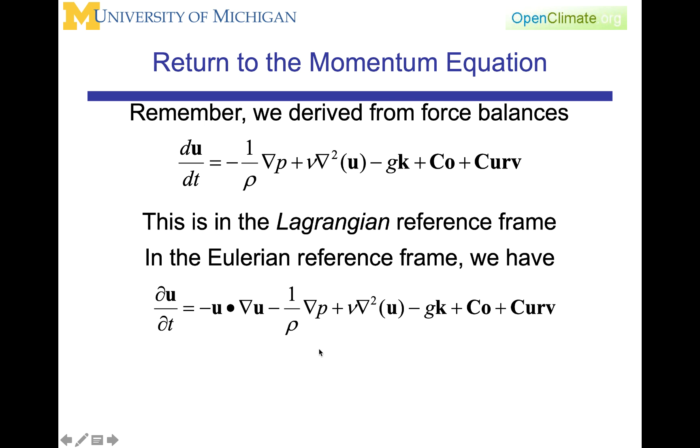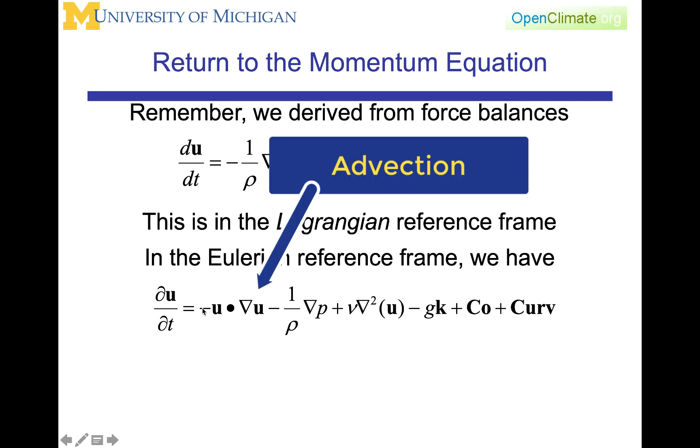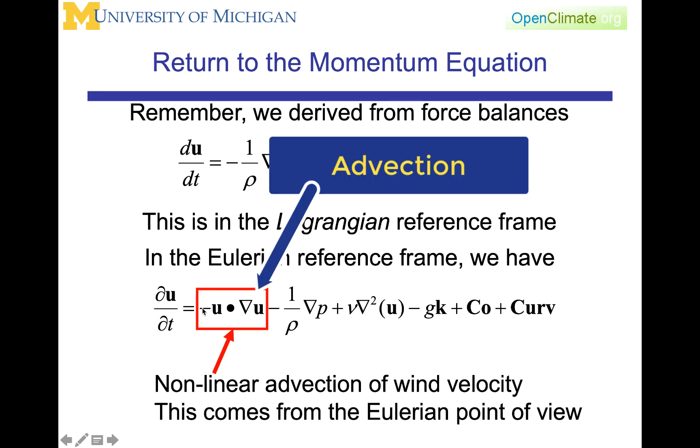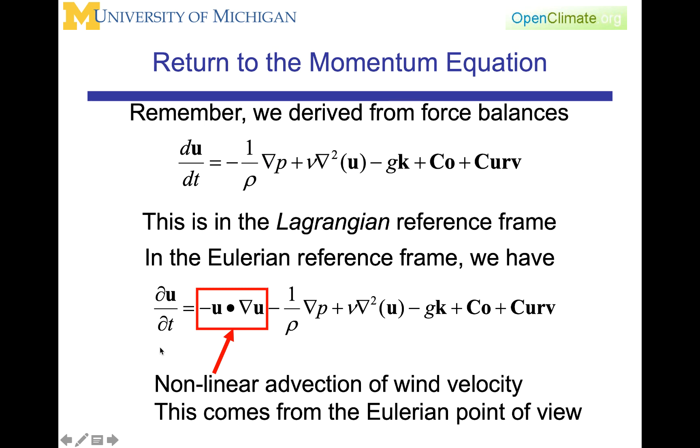In this form of the equation, we have introduced this term here, which is now called the advection, and it is a nonlinear term. It's nonlinear in the sense that this is u operating on u. For a tracer, for instance, smoke or ozone, then it would be u operating on some scalar, which would be, say, smoke or ozone, and it would become a linear equation. But in the momentum equations, this is the nonlinear advection of wind velocity.